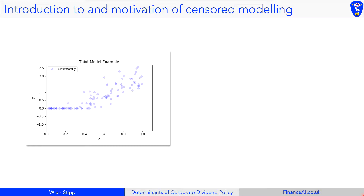For example, if we have a dataset that looks like the one on the left-hand side here, where the dependent variable y is cut off at a certain point — there are no data points below the value of zero. This can happen in multiple dimensions, but for visualization purposes we're focusing on one dimension, though the actual data is about six-dimensional. There's this cutoff point, and fitting a standard linear model through this is going to have some bias because of the clustering of data points.